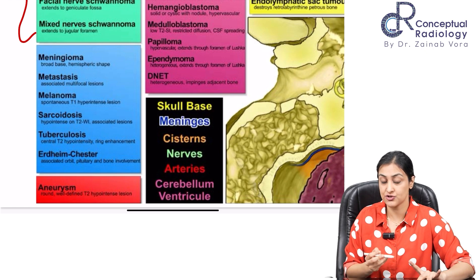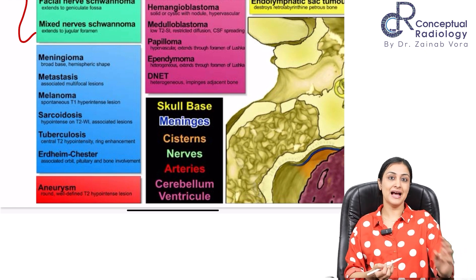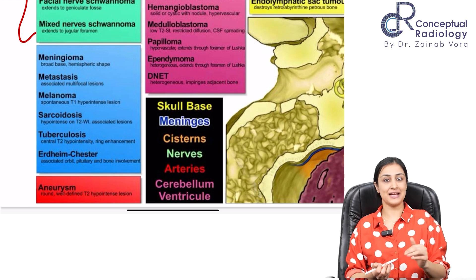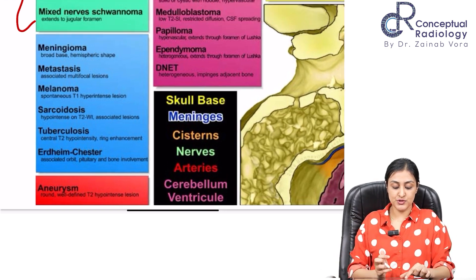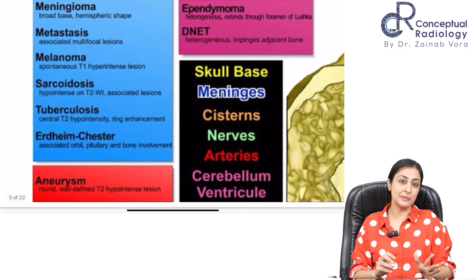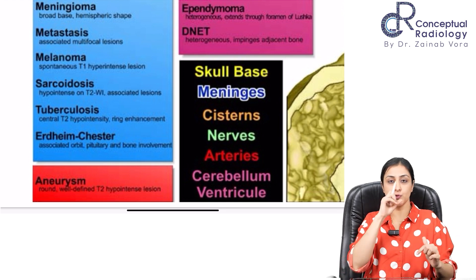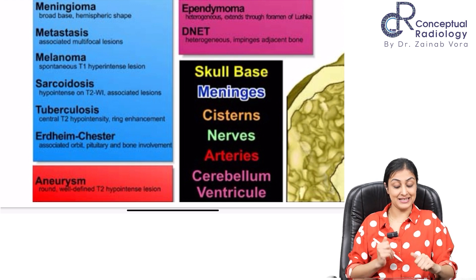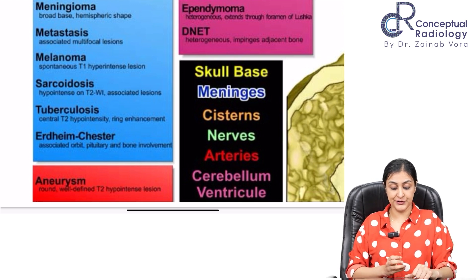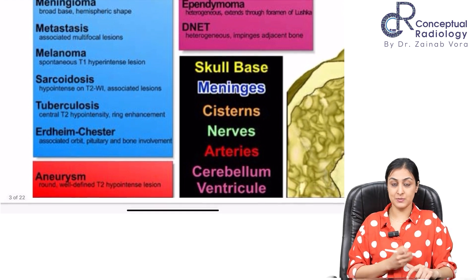Meningioma: the signature features include broad base towards the meninges, avid enhancement, hyperostosis, and calcification. Metastasis as an isolated CP angle lesion is very unlikely — you will typically see multifocal lesions. Sarcoidosis and TB can mimic many pathologies; you'll see multifocal involvement, diffuse meningeal involvement, and other associated findings like ring-enhancing lesions.